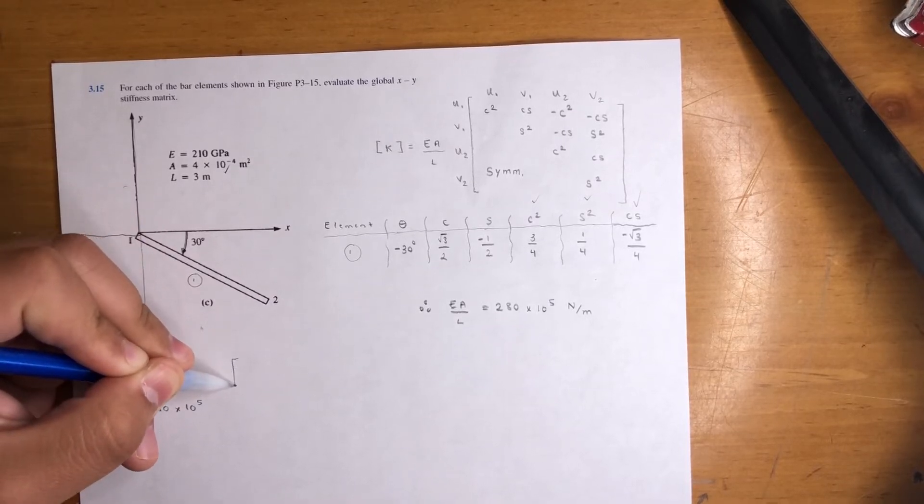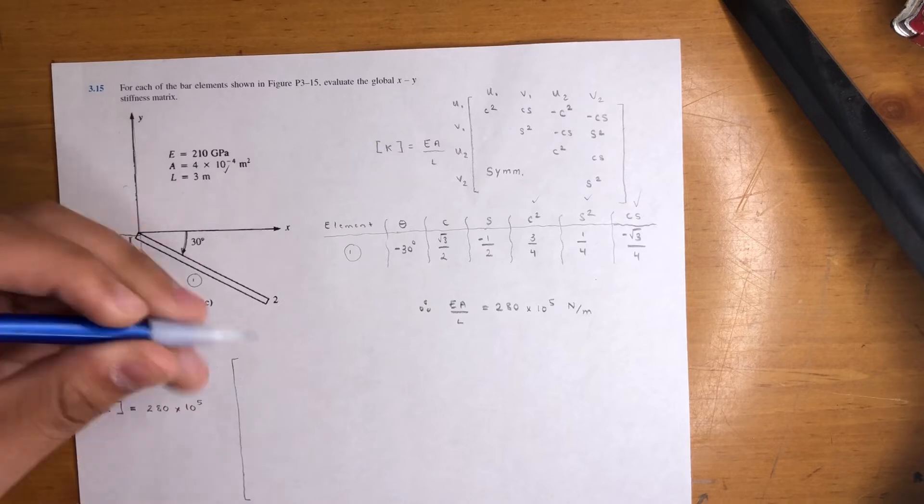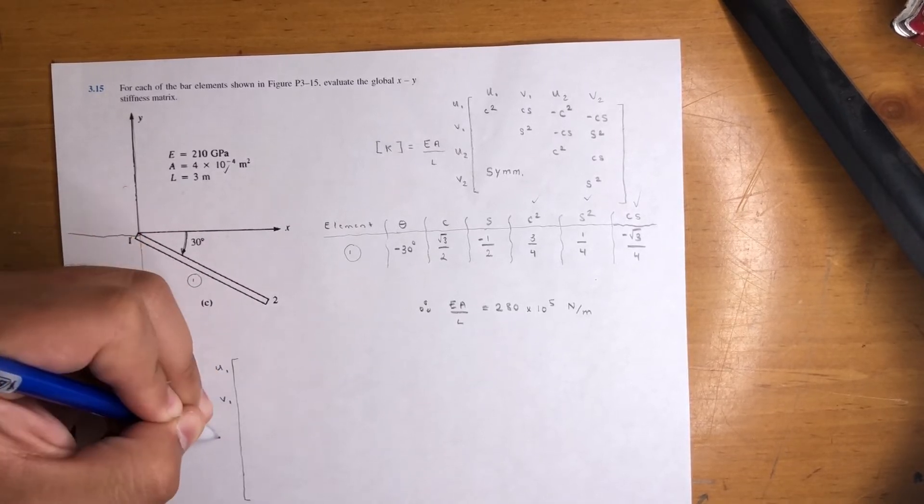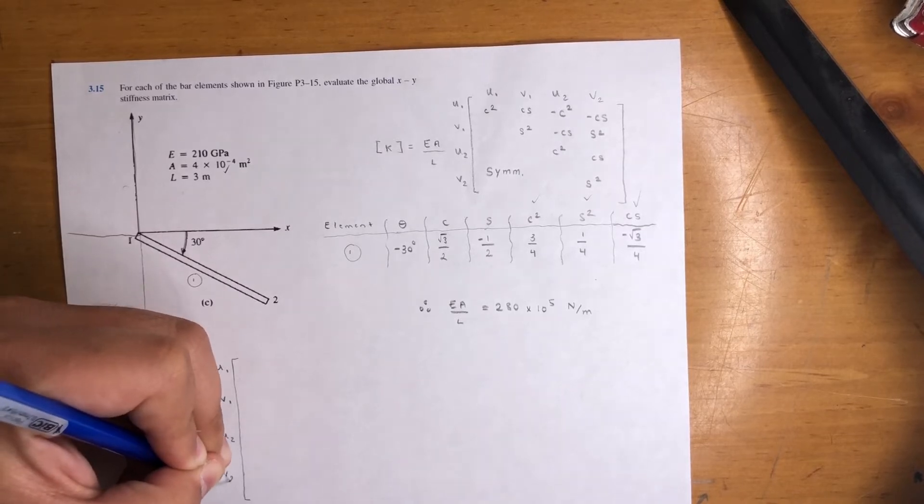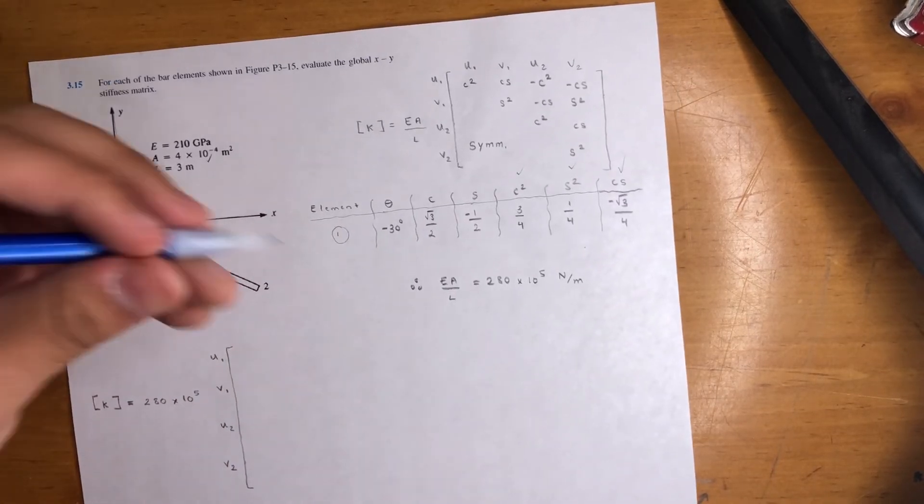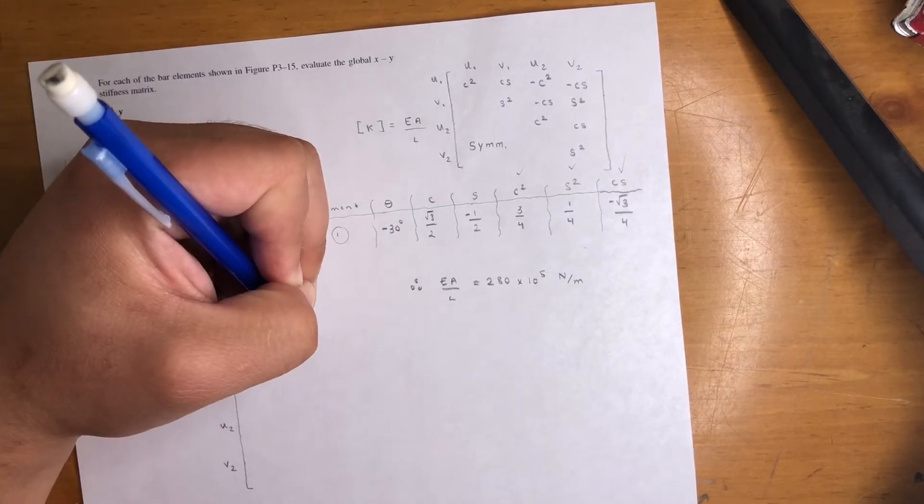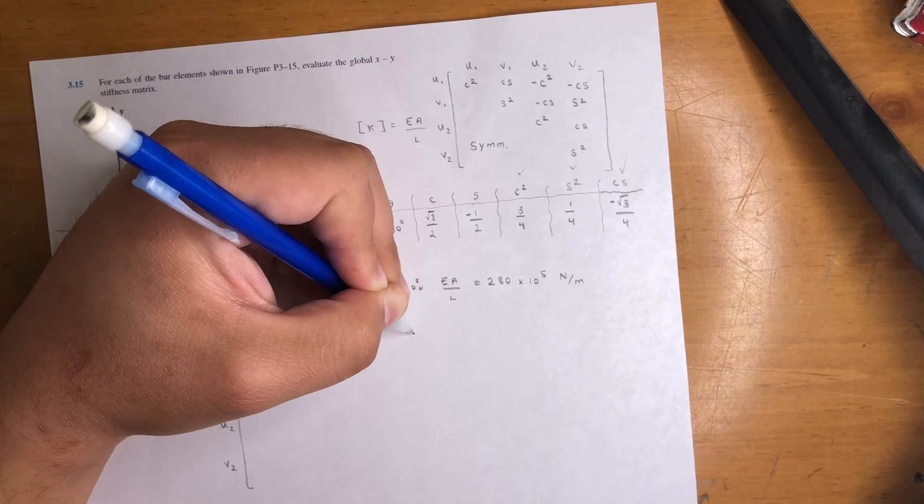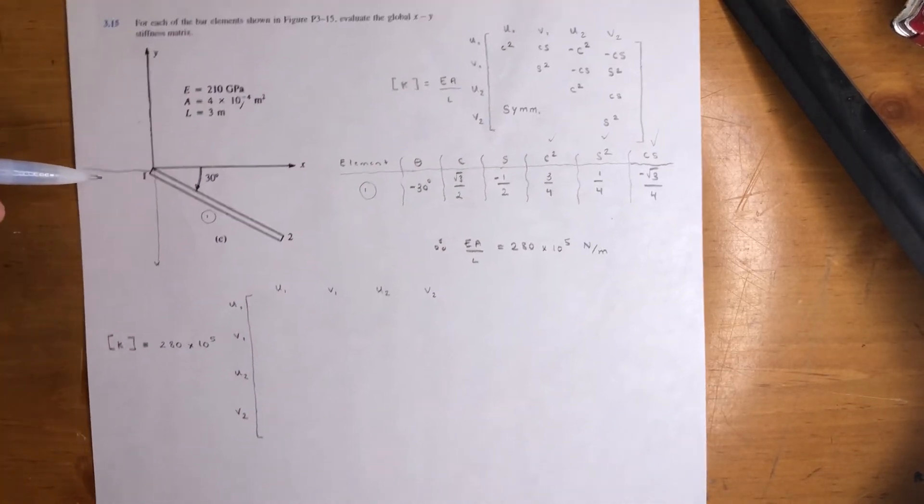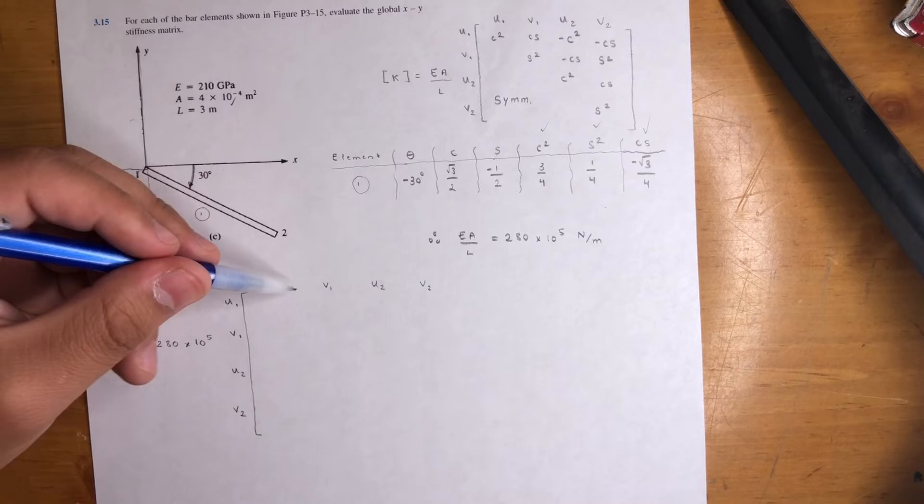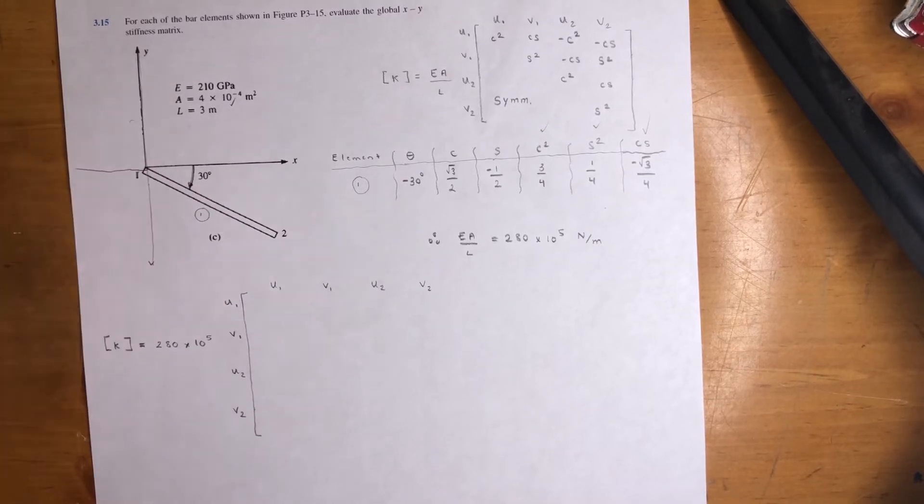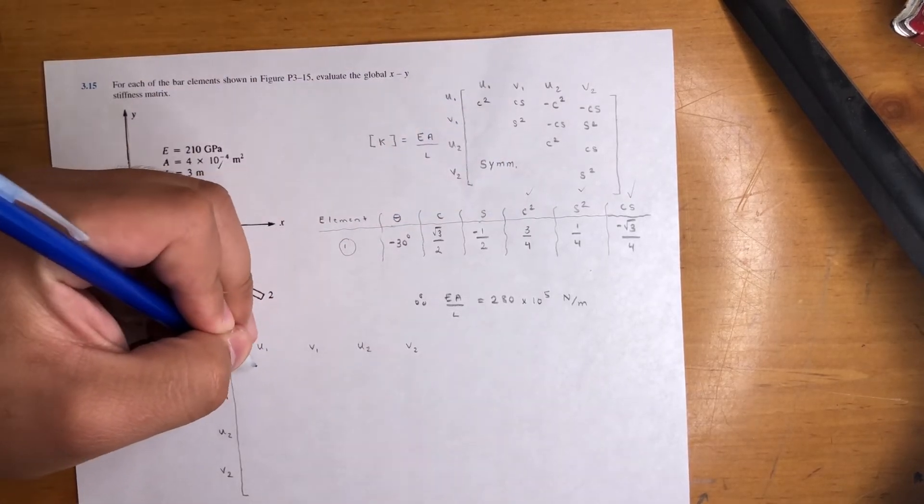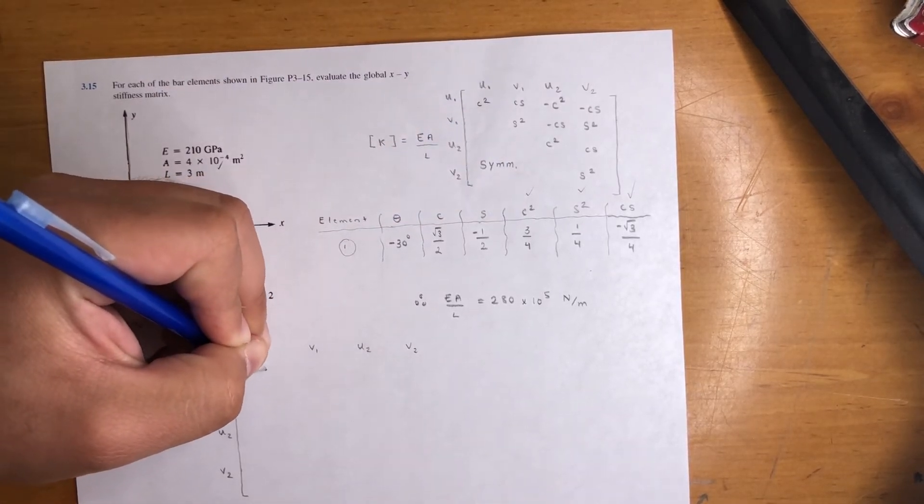And that's going to be - give ourselves some nice room. It's a four by four, but you want to make sure you give yourself enough space. So we got U1, V1, U2, V2, and it's only two nodes. But now we're including X and Y components. So that's why you got U1, V1, X, Y. Plug in, C squared was three over four. So we're going to have three fourth.